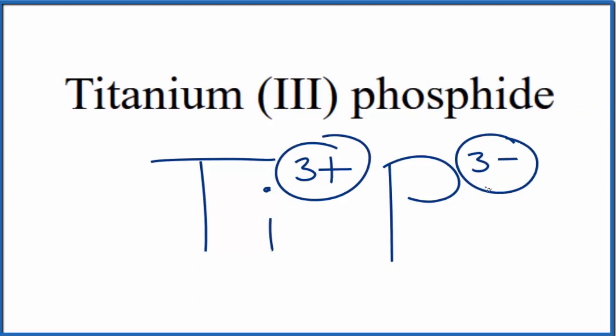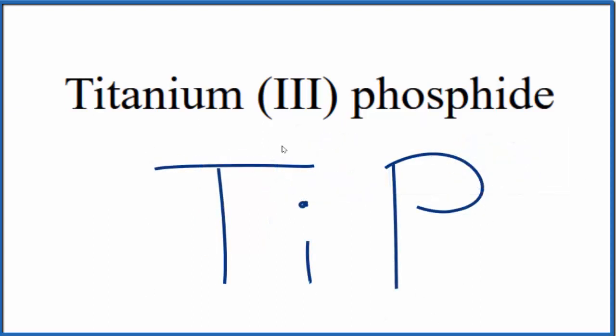3 plus, 3 minus, that adds up to zero. So this is the formula for titanium three-phosphide, TiP.